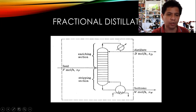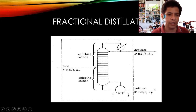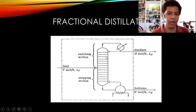Part of the liquid coming out of the column is evaporated and returned back to the column, and the rest is withdrawn as bottoms product. The section above the feed — the trays above the feed — is known as the enriching section or rectifying section, because the concentration of the vapor is greater than that of the feed. In the stripping section, the concentration is lower than that of the feed. In fractional distillation, concentration is expressed as the mole fraction of the more volatile component.